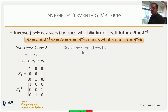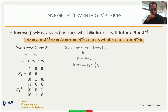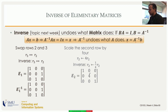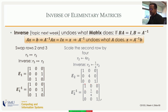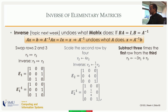For scaling: if the operation is R2 becomes 4·R2, to reverse it I scale R2 by one-fourth. So the inverse of the scaling elementary matrix E2 is just replacing the scale factor four with one-fourth. The first and third rows are unchanged in the product, and the second row of the product gets one-fourth of the second row.